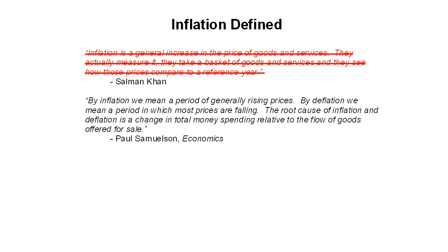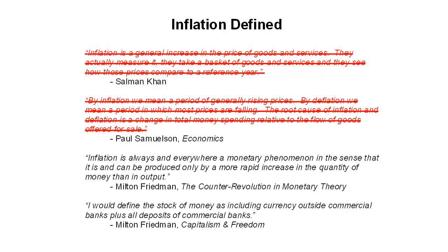However, Samuelson's definition is also incorrect, and Milton Friedman has provided us with the alternative. He talks about how inflation is always and everywhere a monetary phenomenon in the sense that it is and can be produced only by a more rapid increase in the quantity of money than in output. He said that in 'The Counter-Revolution in Monetary Theory.' He also added that he would define the stock of money as including currency outside commercial banks plus all deposits of commercial banks.